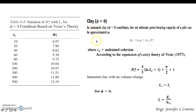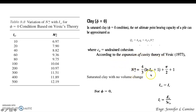For clay, when φ is equal to zero, the ultimate point bearing capacity of the pile is given by this equation. C sub U is the undrained cohesion. According to the expansion of cavity theory of Vesic, N sub C asterisk is equal to the Vesic equation. When it is a saturated clay with no volume change, our reduced rigidity index is equal to the rigidity index. For φ equal to zero, this is the value for our rigidity index.